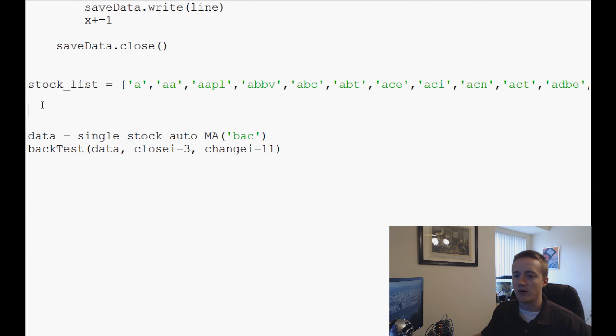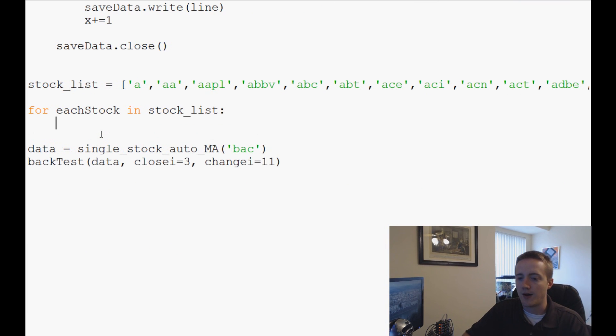And then what we want to do is we're going to say for each stock in stock list. What do we want to do? Well, here we're just going to say data equals single stock auto MA. And then we're going to say each stock. So each stock in this list will be fed through this auto MA, which basically returns the data frame, which we're saving as data at the moment.